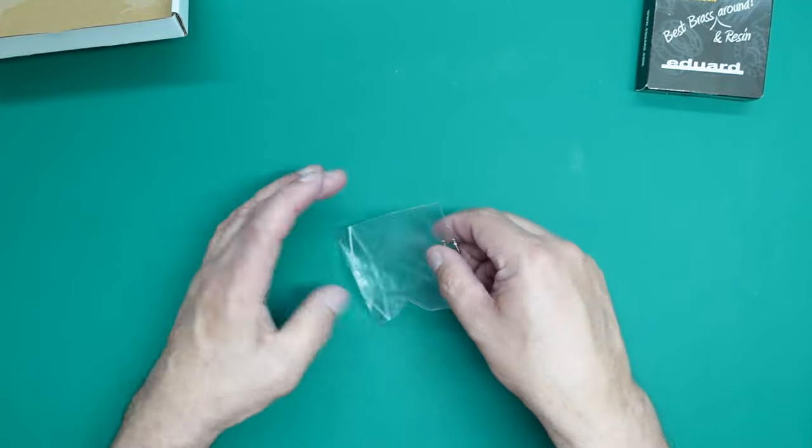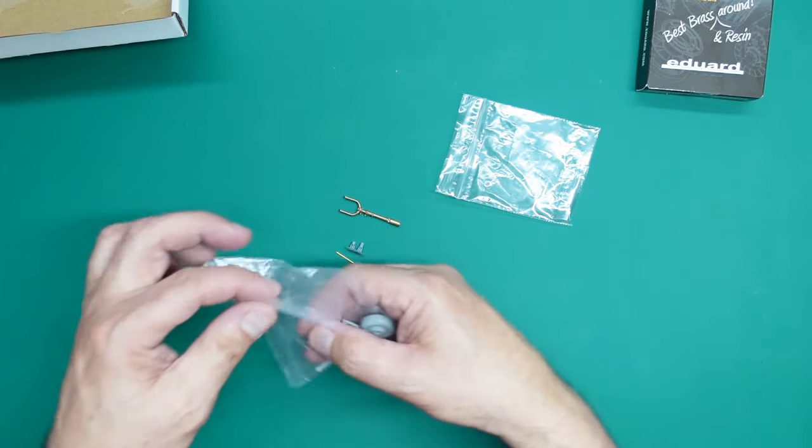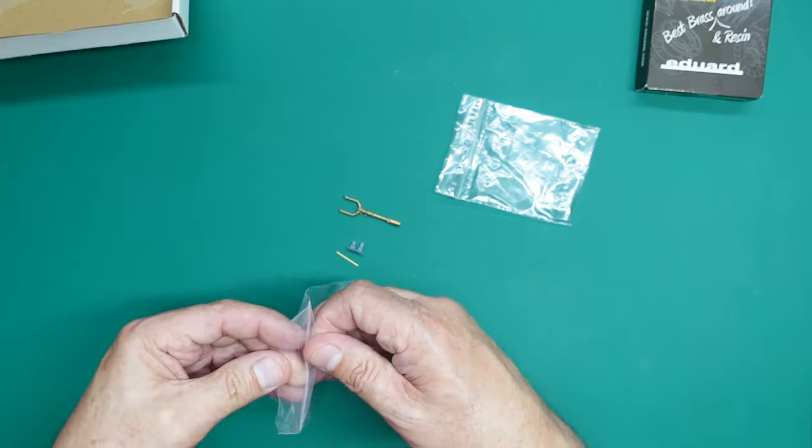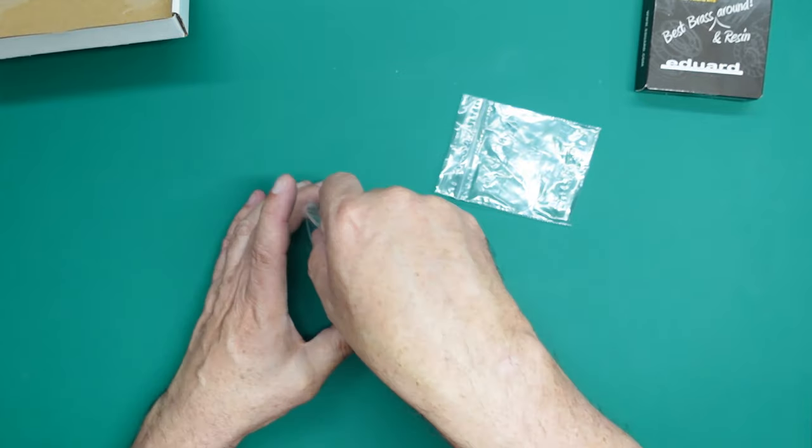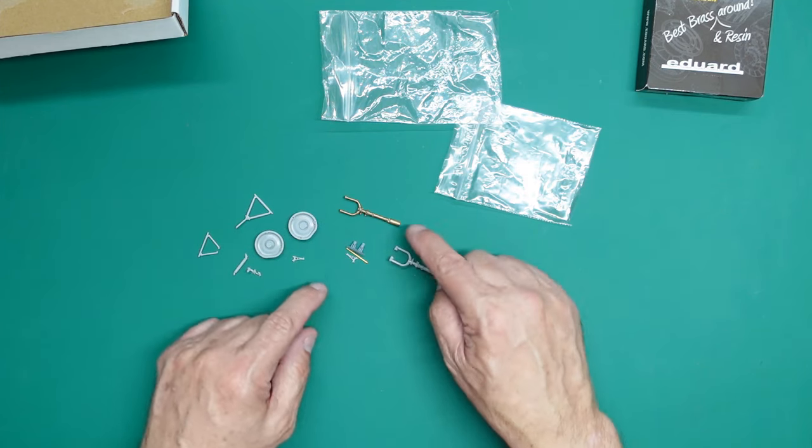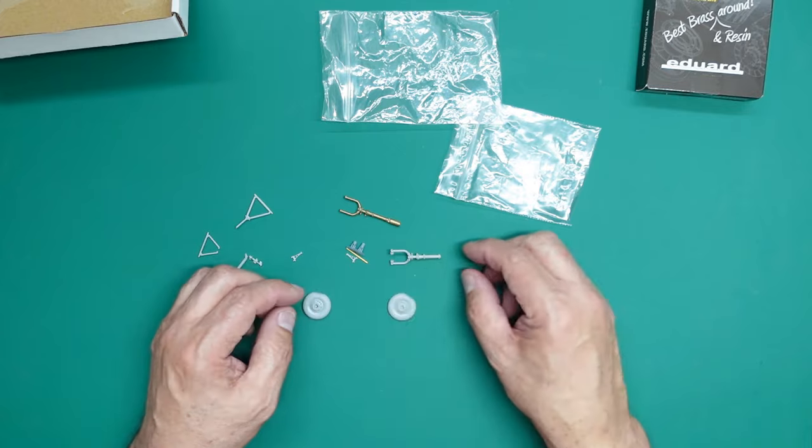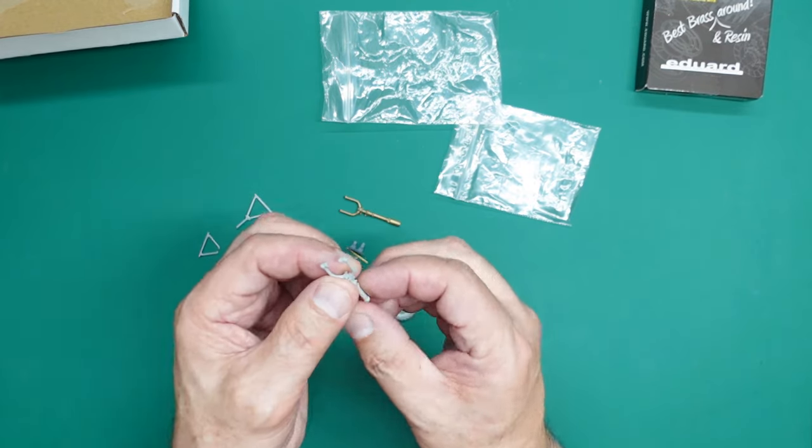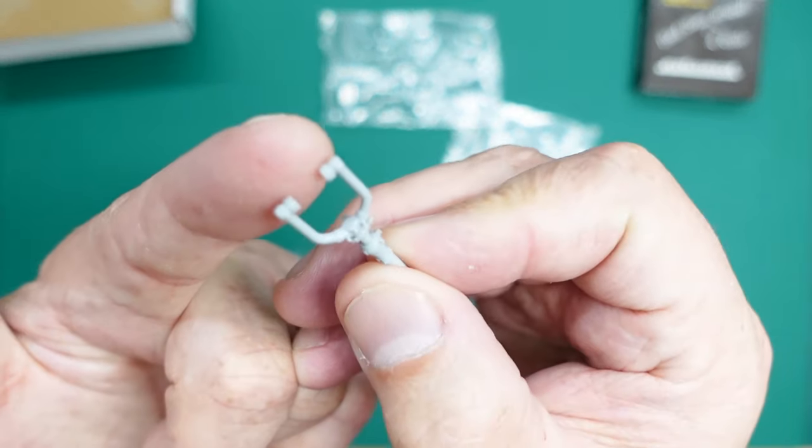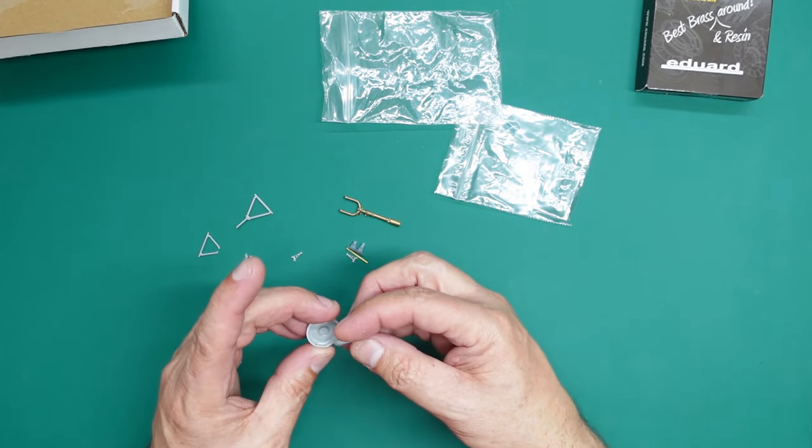Let's have a look at this nose gear first. The big problem with the kit part is it's very, very weak. I've got the kit parts here. These are all the kit parts that make up the nose gear, and this is the bag I sent to Alley with all the parts so he could make the brass replacement.